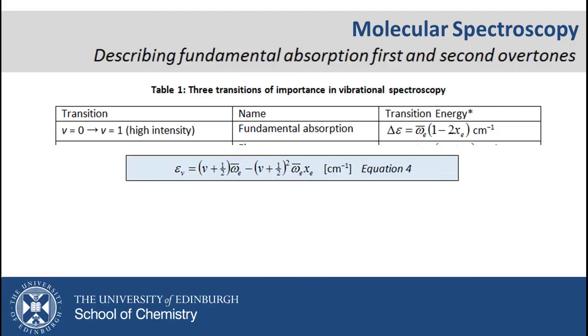Let's look at the fundamental absorption. This is the absorption from the V equals 0 state to the V equals 1 state, so the process is to express the energy of each of these states and then calculate the difference. For V equals 0, substituting 0 for V in the general expression results in the equation shown. Similarly, for V equals 1, we get the expression shown. Take care when squaring the fractions.